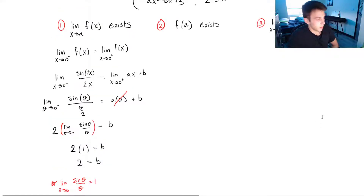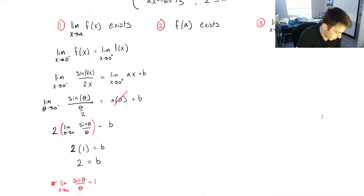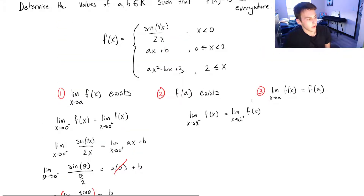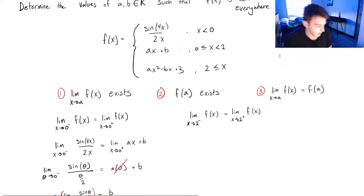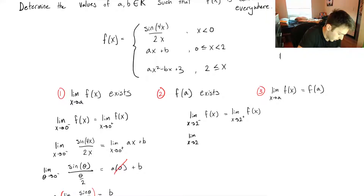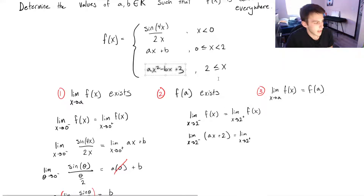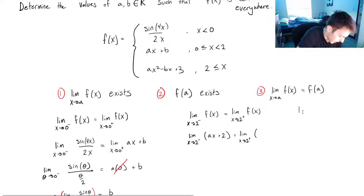Using the same logic at x=2: the limit as x→2⁻ of f(x) must equal the limit as x→2⁺ of f(x). When x is less than 2, the function behaves as Ax + B, and we now know B=2, so the left-side limit is the limit as x→2⁻ of Ax + 2. From the right, the function is Ax² − Bx + 3, and substituting B=2 gives Ax² − 2x + 3.